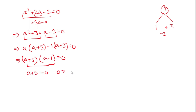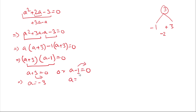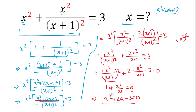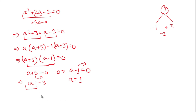Since the product of two factors is zero, either a + 3 = 0, giving a = −3, or a − 1 = 0, giving a = 1. Recall that a = x²/(x+1), so we now back-substitute to find x.